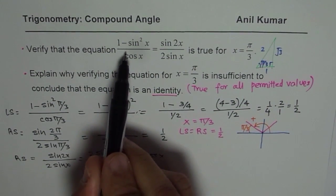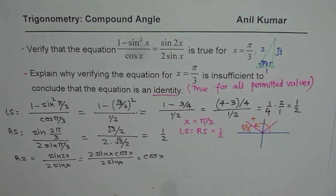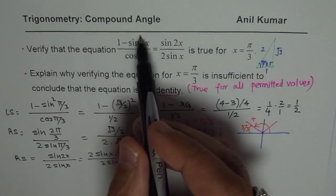Now if you look into the left side, that is also cos x. 1 - sin²x is cos²x divided by cos x, which equals cos x. Do you see that?